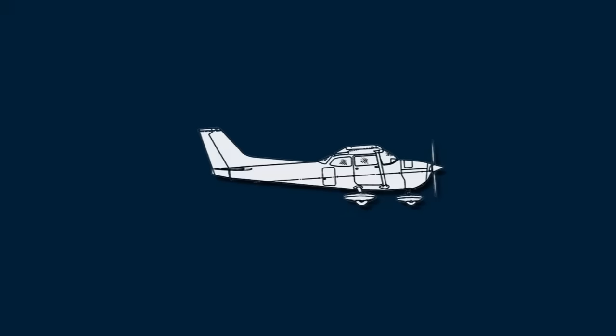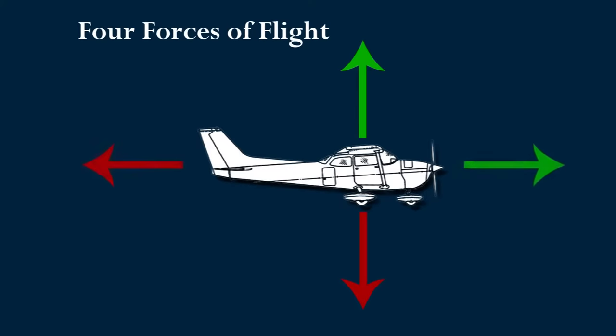Let us begin by discussing some basic aerodynamics. There are four main forces that govern an aircraft's movement: lift, thrust, drag, and gravity. It is the balance of these four forces that determines in which direction an aircraft accelerates. When the aircraft is moving at a constant speed and altitude, these forces add up to zero.